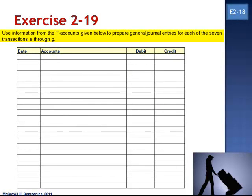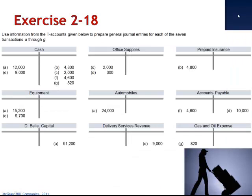Exercise 19 asks us to take the information from the T-accounts in Exercise 18 and prepare the journal entries. This is pretty easy because we already have the information and we already know whether it's a debit or a credit. So returning to Exercise 18,